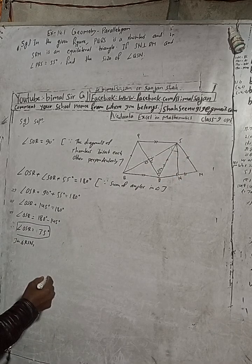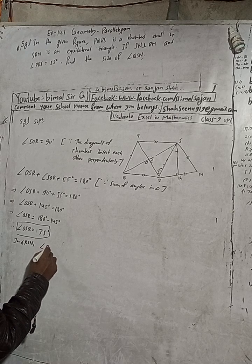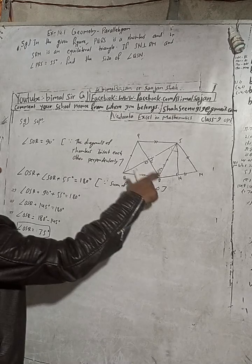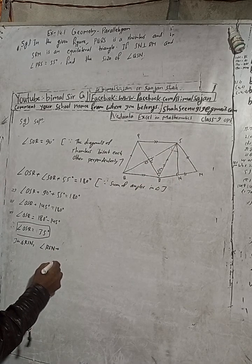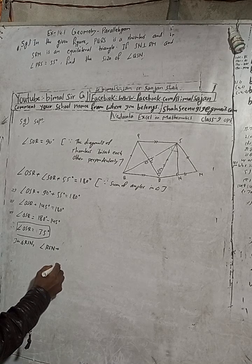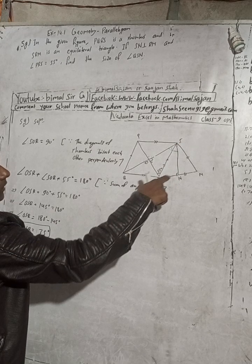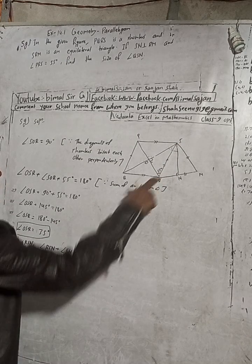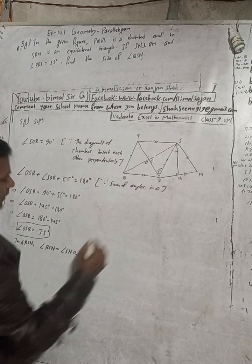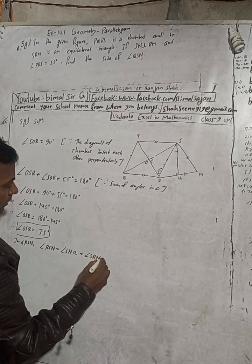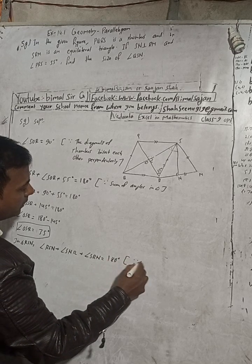In triangle RSM, we need to find angle RSN. Angle RSM plus angle SNR plus angle SRN equals 180 degrees. Same reason: sum of angles in a triangle equals 180 degrees.